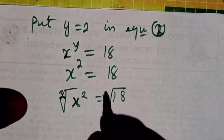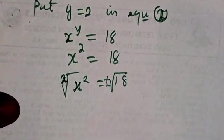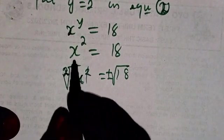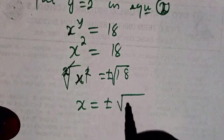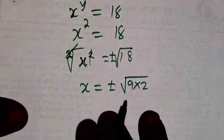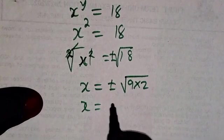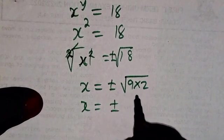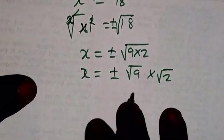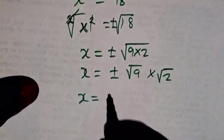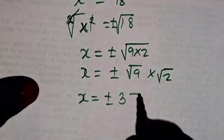Don't forget we're going to be having plus or minus. We have x equals plus or minus, this will be 9 times 2. So x equals plus or minus the square root of 9 multiplied by the square root of 2. We have x equals plus or minus 3 root 2.